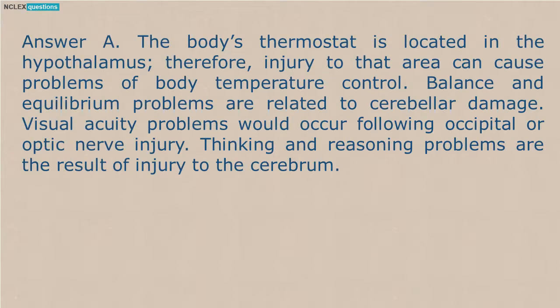Answer A. The body's thermostat is located in the hypothalamus; therefore, injury to that area can cause problems of body temperature control. Balance and equilibrium problems are related to cerebellar damage. Visual acuity problems would occur following occipital or optic nerve injury. Thinking and reasoning problems are the result of injury to the cerebrum.